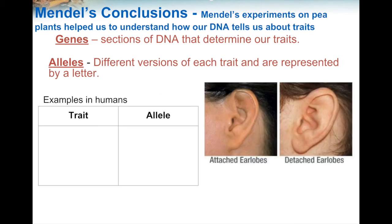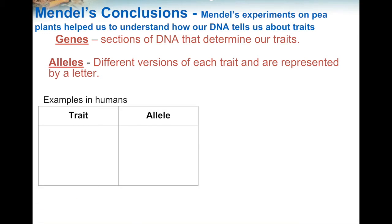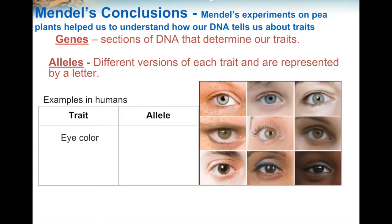Let's look at examples of traits and alleles in humans. For the trait of earlobes, there are two different versions or alleles — some people have attached earlobes, and other people have detached earlobes. The trait for eye color has more than two versions or alleles — some people have brown, some have hazel, blue, or green. So in some situations, traits can have more than just two versions or alleles.